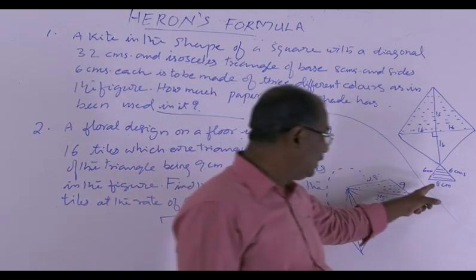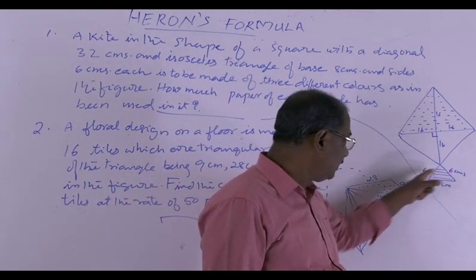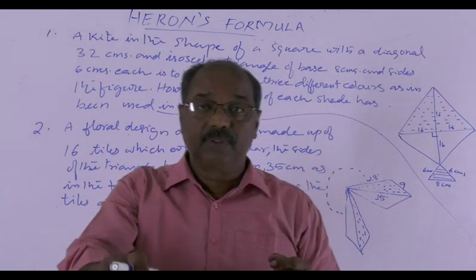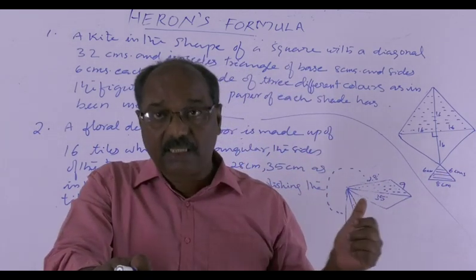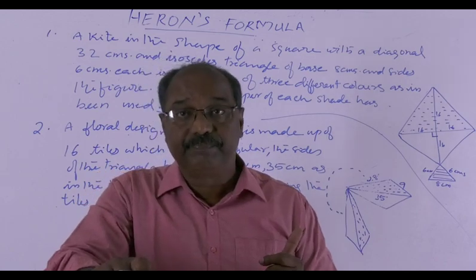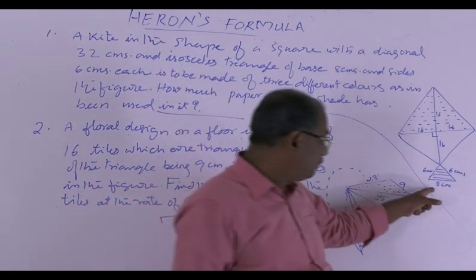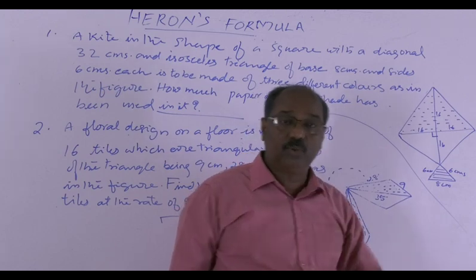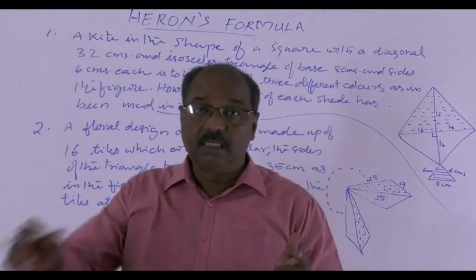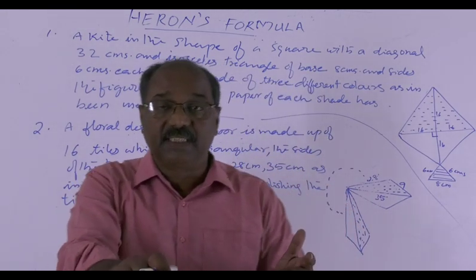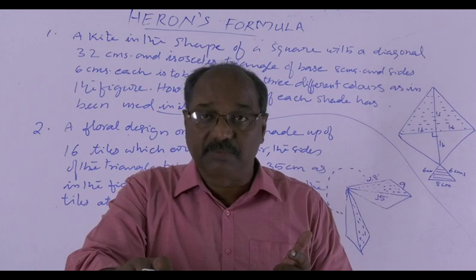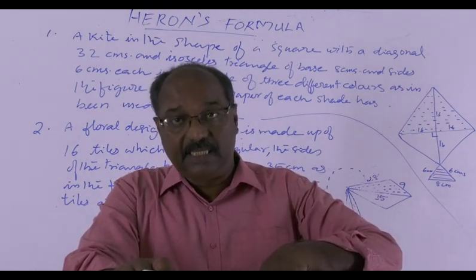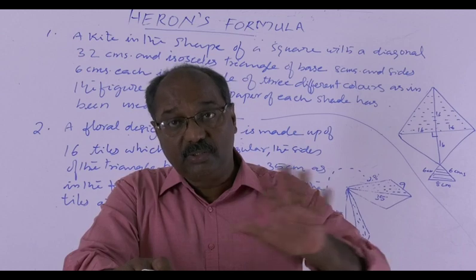With the base and the equal sides given, and the other half base. So this is the lower base of the square. Then you will get the area. So you can do it yourself.